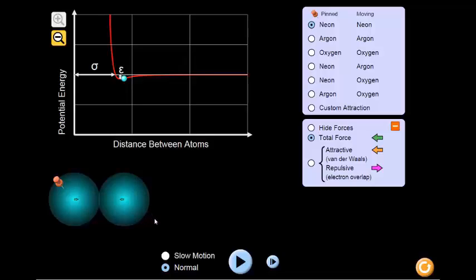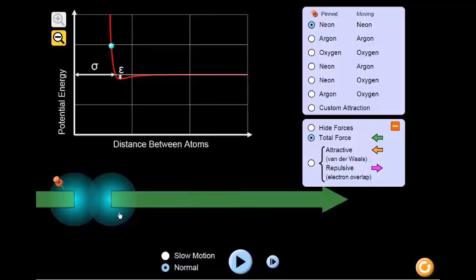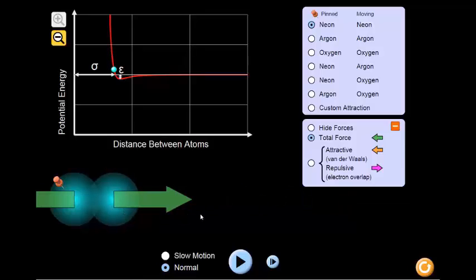Now we'll take a look at what happens when the two atoms are very close to each other and are overlapping. Looking at the green arrows, is there now an attractive or repulsive force? Take a second to answer the question on your worksheet.